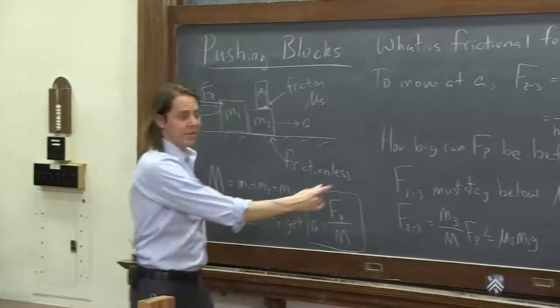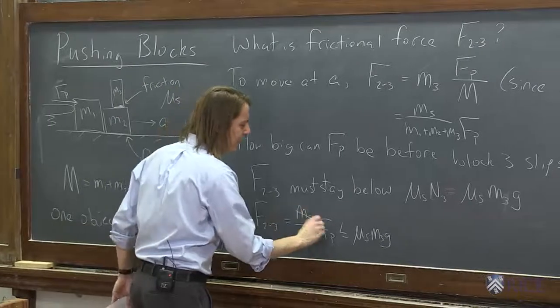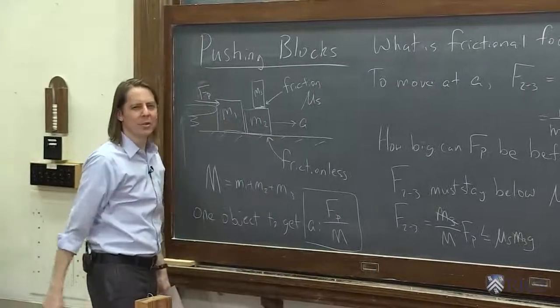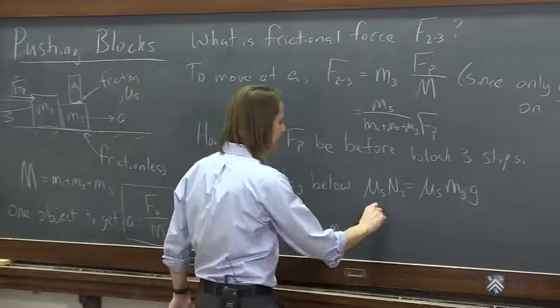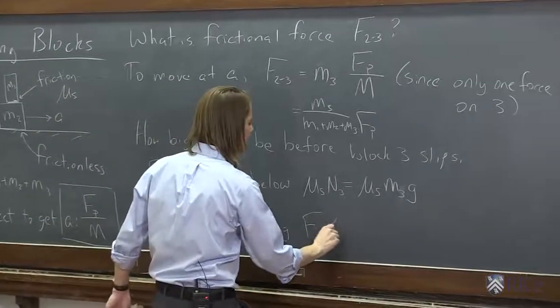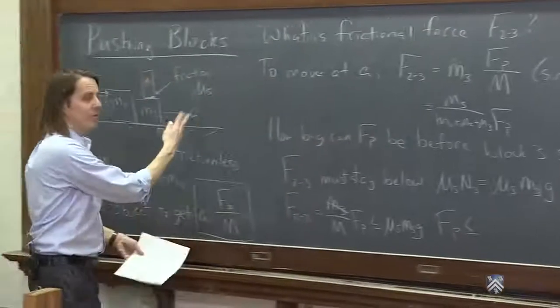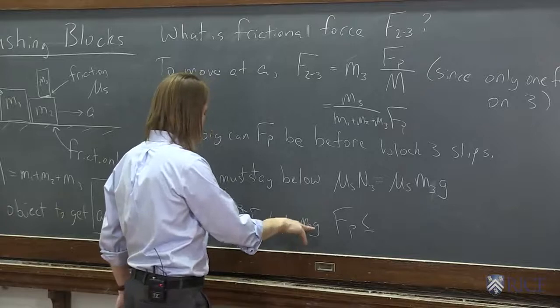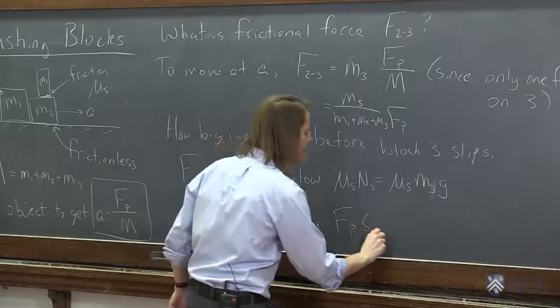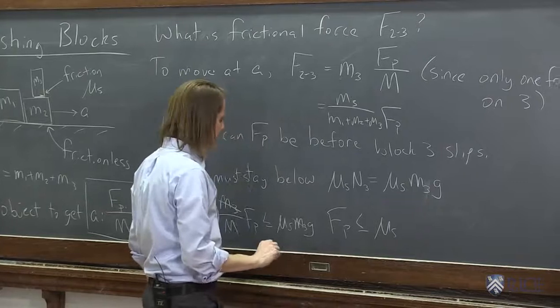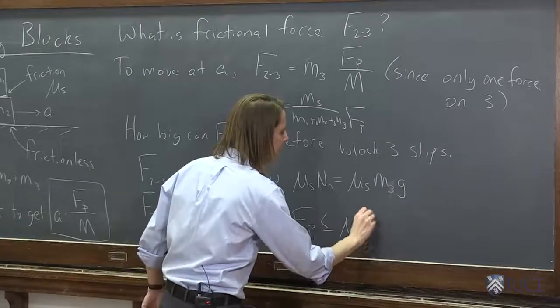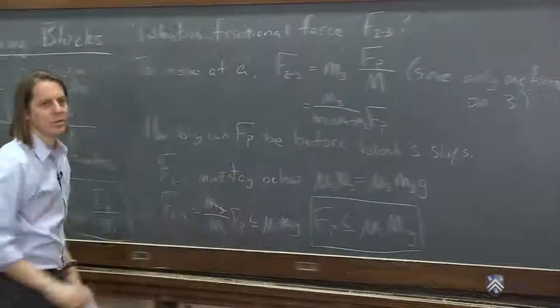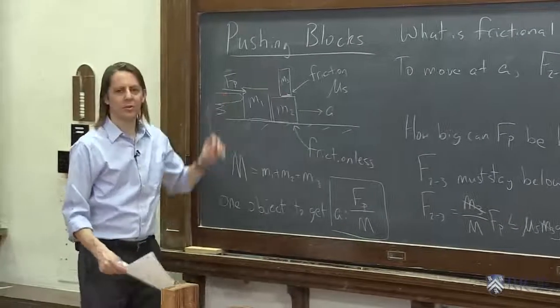So if you wanted to solve that then for Fp, you could say this has to stay below. And you see what's interesting is the M3s cancel. It doesn't actually matter how massive M3 is. It's a little bit unexpected. You have to say that the force, the push force, doesn't depend on M3, but there is a limit. You can only push so hard before it'll slip. And it's the mu s g times big M. The static coefficient times big M times g.